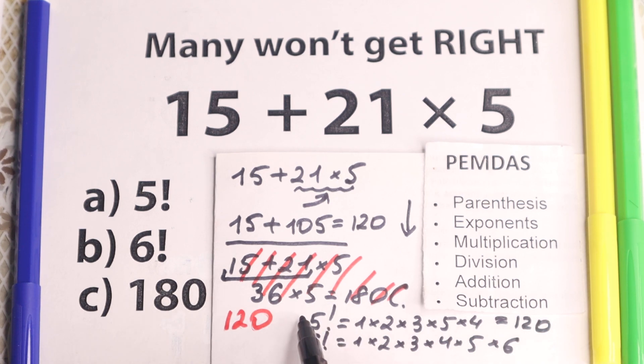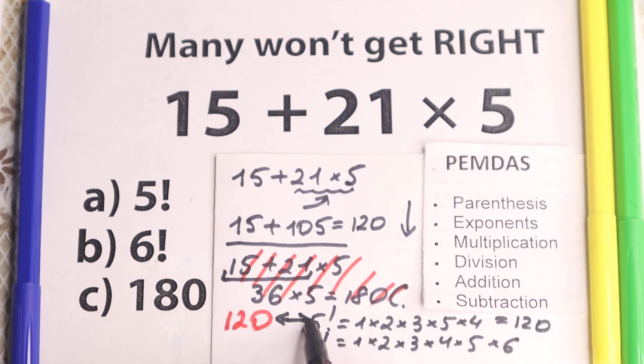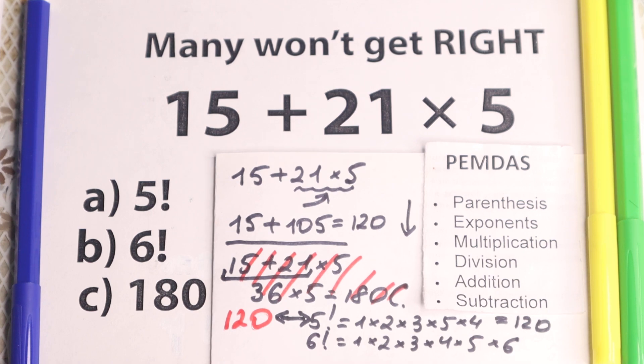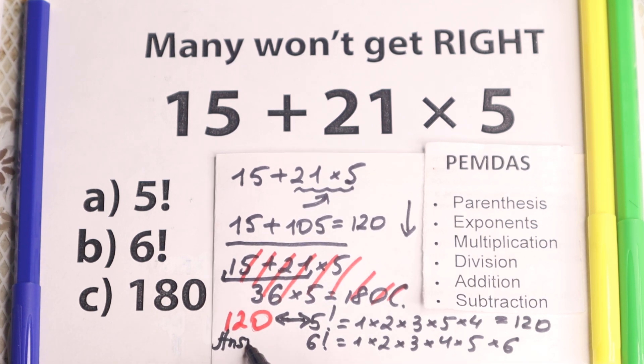Look at it, the same answer, so 120, this is the same as 5 factorial, which is really great, and we can easily say that our answer to this question is option A, according to PEMDAS.